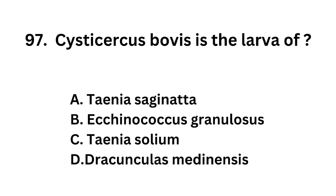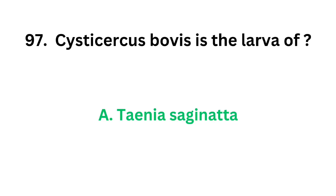Question number 97. Cysticercus bovis is the larva of: option A. Taenia saginata, option B. Echinococcus. The correct answer is option A, Taenia saginata. Cysticercus bovis is the larva of Taenia saginata.